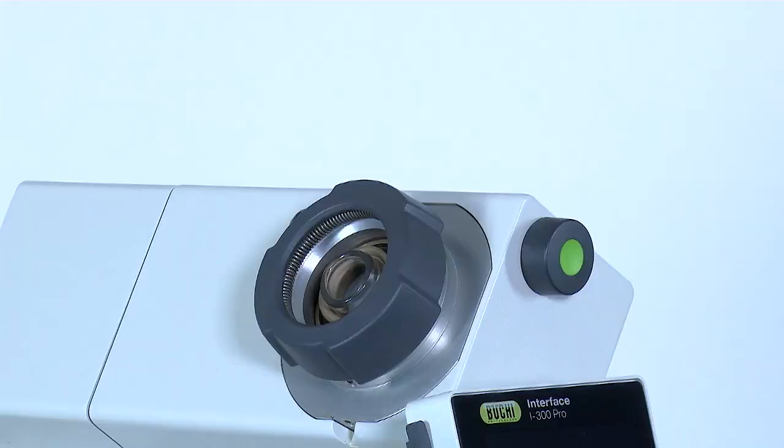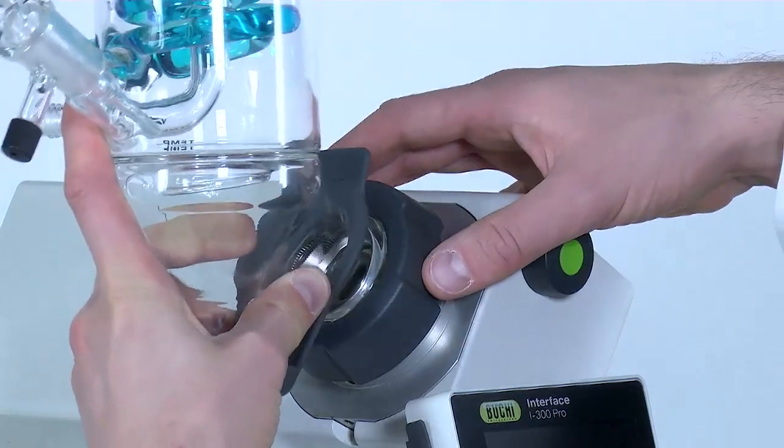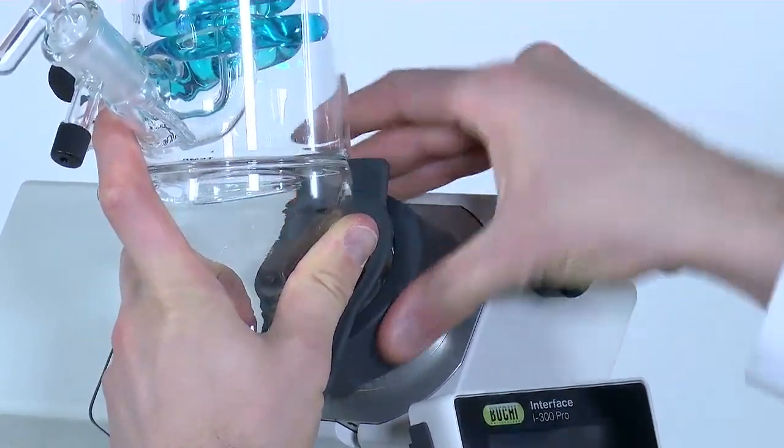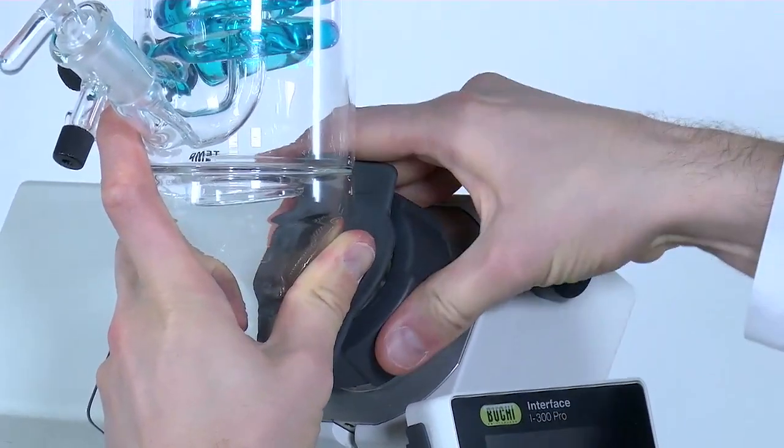The last step is to place the condenser on top and screw in the flange. It is mandatory that you always follow this sequence.